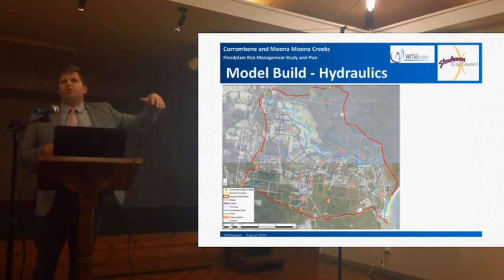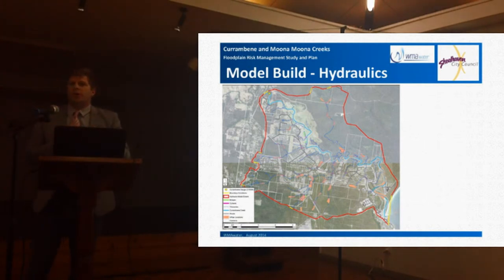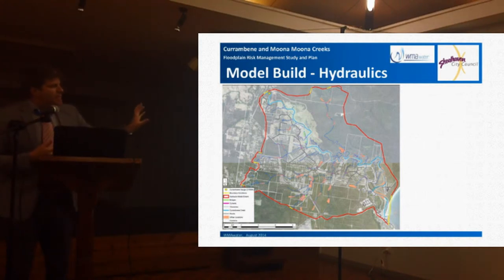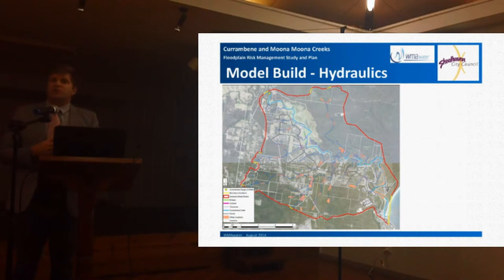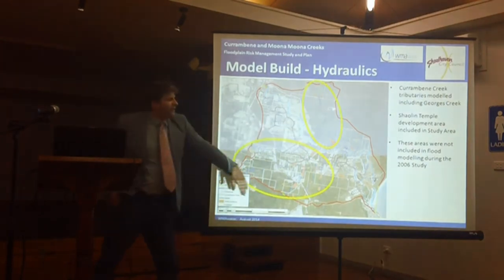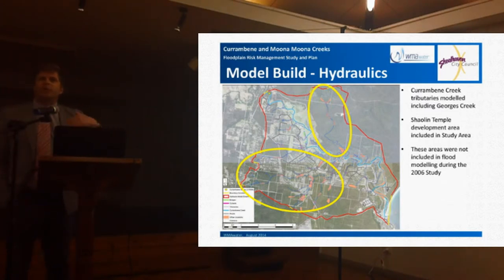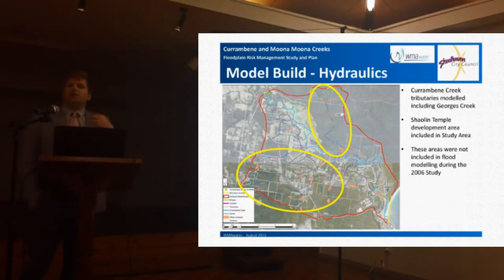The hydraulic model turns that runoff into an extent we can map. We get levels that can inform, for example, what height a floor should be for a new development. The colours represent different features in the model where we're applying flow, or structures like bridges. One area highlighted up here is where a temple development is proposed — this has been incorporated into the model in addition to what was modelled in the 2006 study. Georges Creek has been added too, because there are places where we're seeing rezoning and potential development, so the idea is to look at those in the context of flooding.